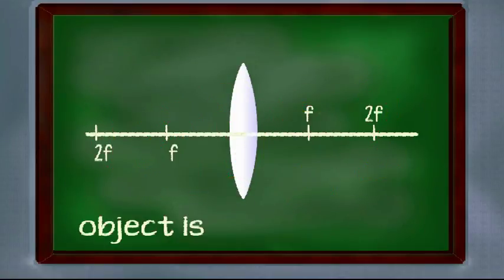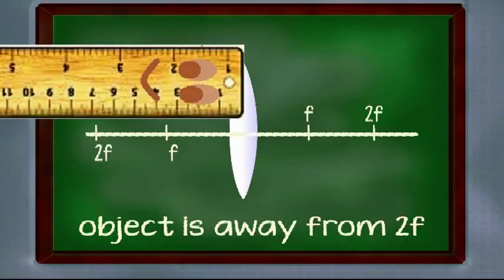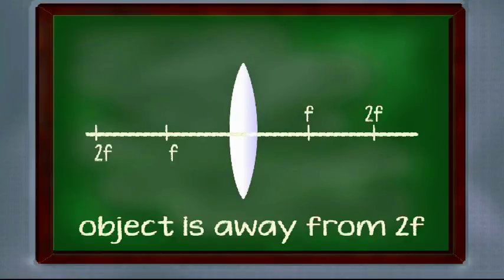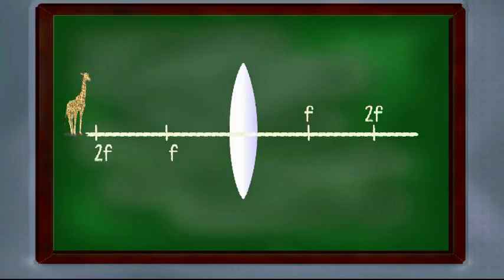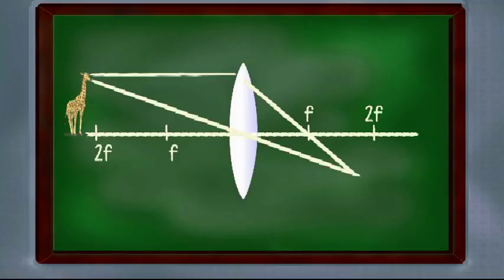Case 2, when object is away from 2f. Now here 2f is double of focal length. So when object is away from 2f, similarly ray parallel to principal axis, it converges to the focus point passing through the focus point and other line passing through the center of lens.